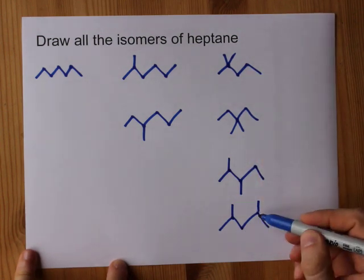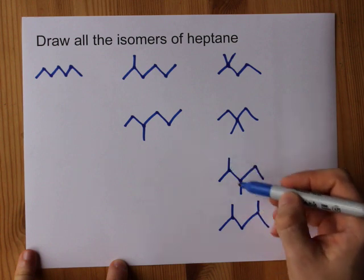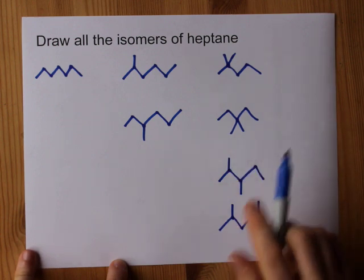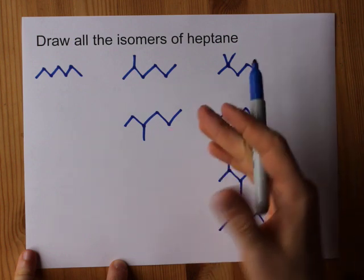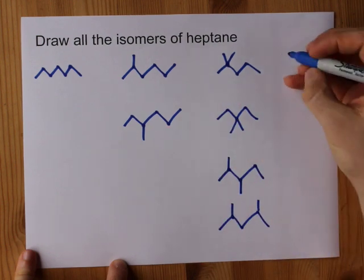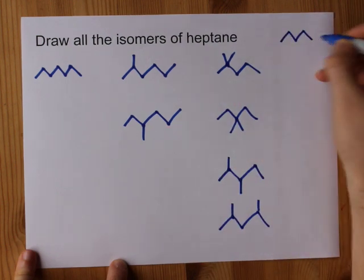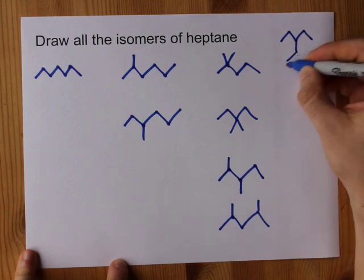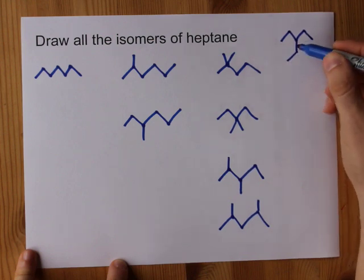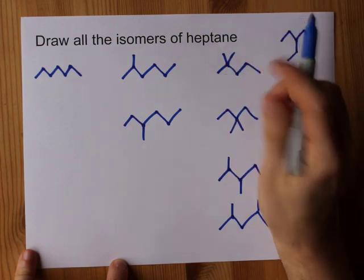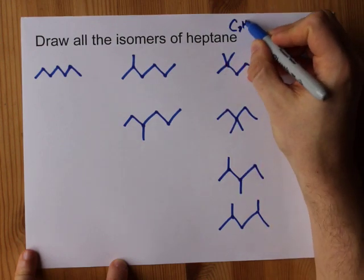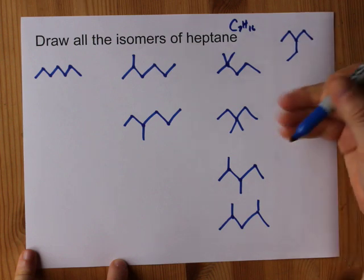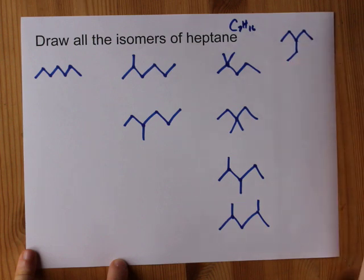If I put them on carbons 3 and 4, then I'd have the same as 2 and 3, just counted from the other side. There's actually one other option here, which is the one most kids forget: give yourself the pentane and then attach an ethyl group — a 2-carbon chain — to the middle. Heptane is the smallest alkane, C7H16, that allows you to have an ethyl substituent.